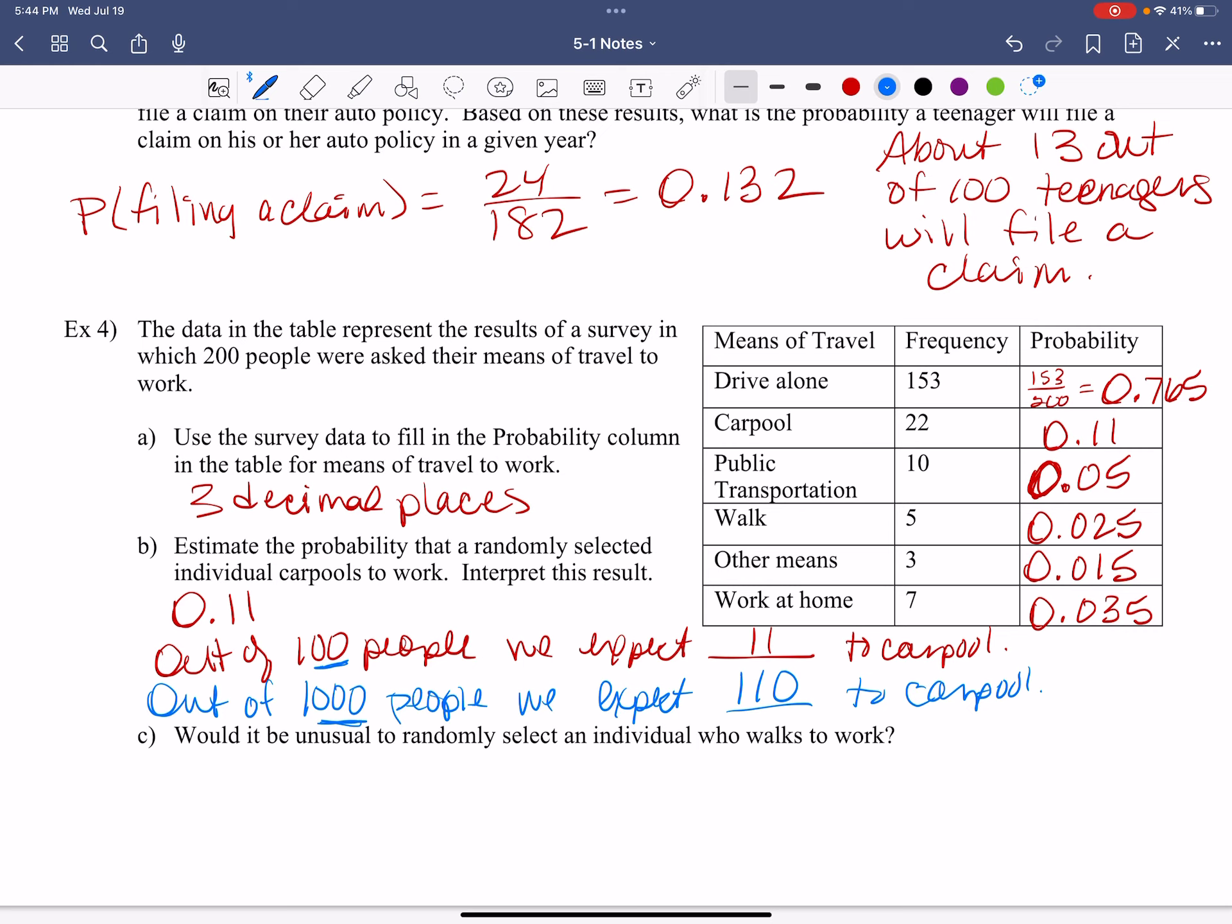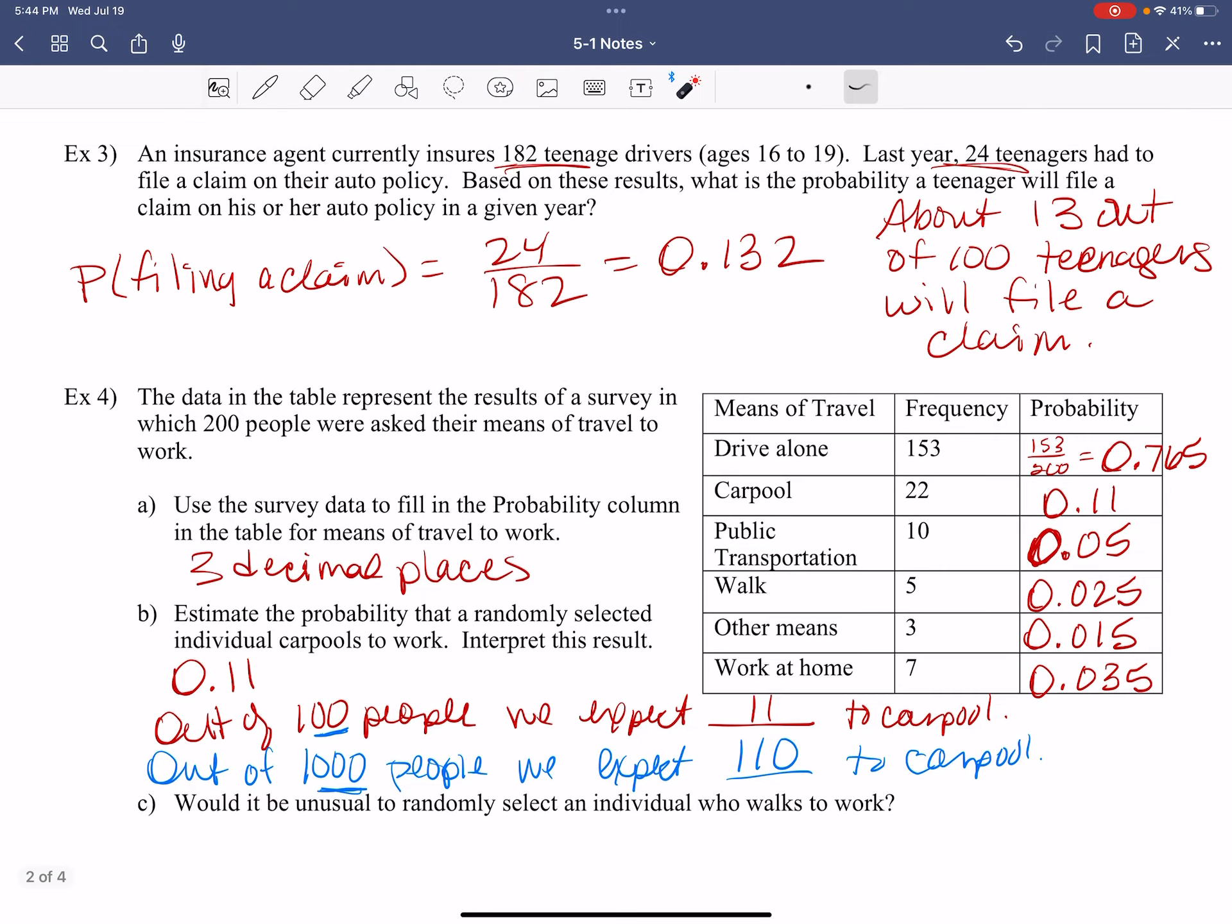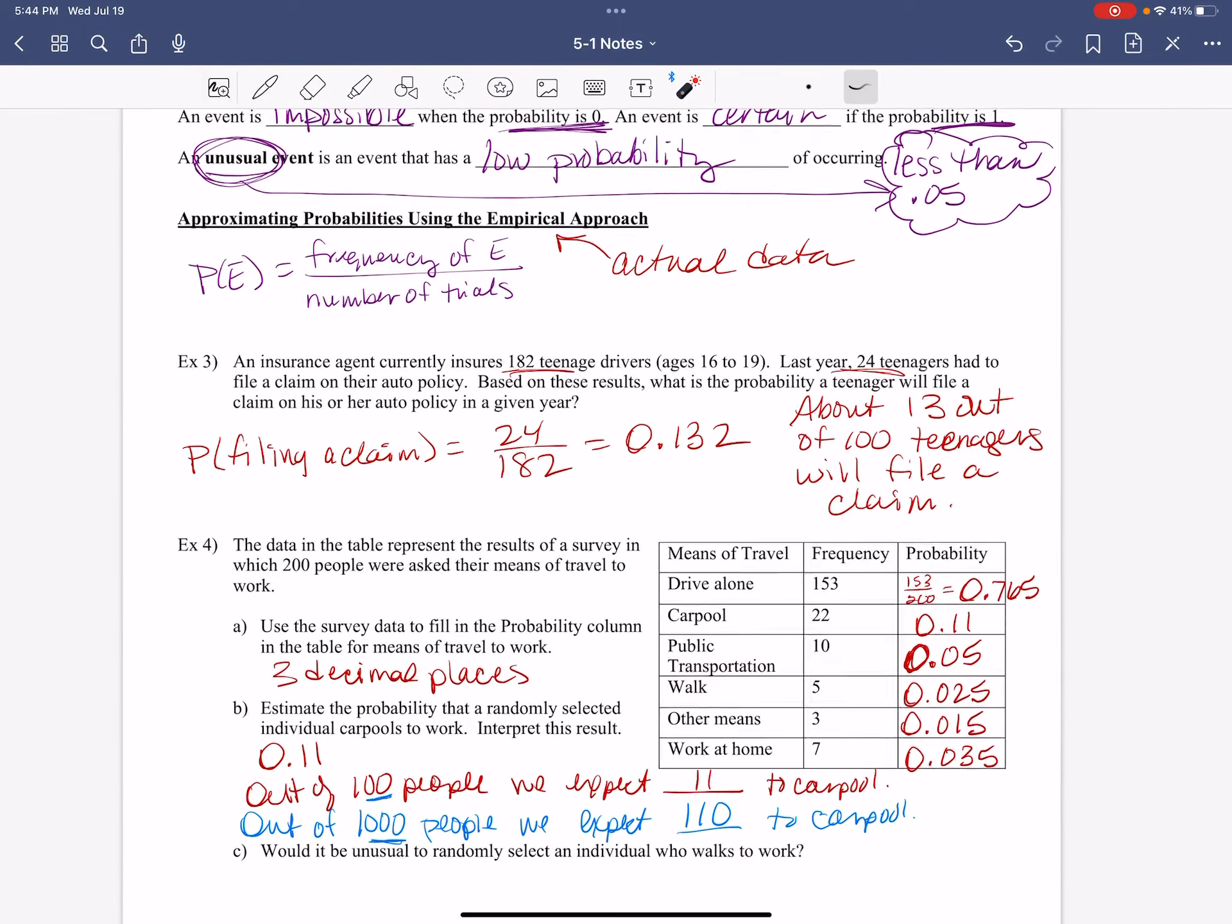Now here's the next question. Would it be unusual to randomly select an individual who walks to work? Walking individual. Would it be unusual? Ah, remember we said, let me squeeze this down and see if I can put it up there. Unusual is not an opinion.